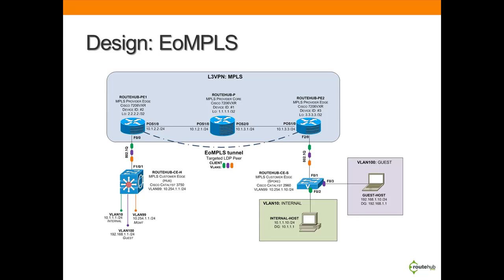In this design, if our guest network wants to communicate with the internal user computer, it needs to be routed across the Layer 2 VPN network through the guest VLAN and then back across the Layer 2 VPN network through the internal VLAN. We will show you the configuration, monitoring, and even traceroute information for this design step-by-step.